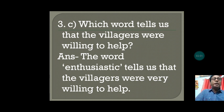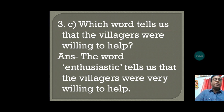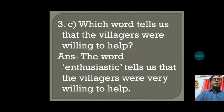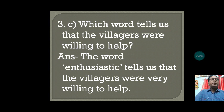The answer is: the word 'enthusiastic' tells us that the villagers were very willing to help. This is the word used in that paragraph in the story, when they met the villagers and saw their interaction and their way of talking. They came forward to help, and the writer used the word 'enthusiastic' to show that the villagers were very willing to help.